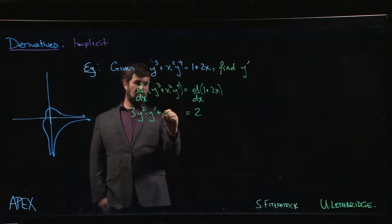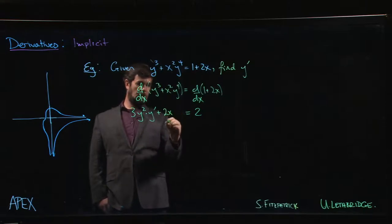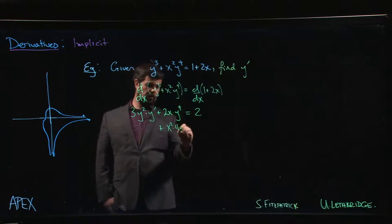The derivative of x squared is 2x times y to the 4, but there's one more term we got to fit in here. We have x squared times the derivative of y to the 4, which is 4y cubed times y prime.